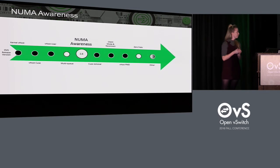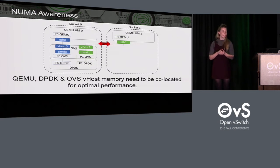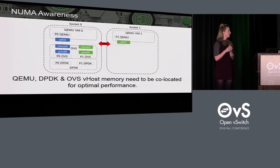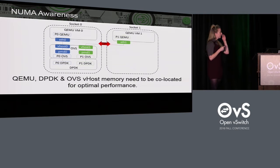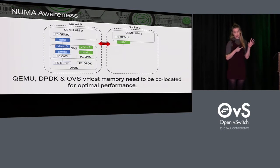The first feature I'll go into detail on is NUMA awareness. NUMA-aware vhost user is a DPDK feature introduced in DPDK 16.4 and integrated into OVS 2.6. It was introduced to address a problem with a common configuration where you have VMs with vhost user ports running on separate NUMA sockets. The diagram shows that setup: two sockets, two VMs each with vhost user ports, and OVS DPDK running on the host. The memory associated with each port is color coded — VM0 memory is in blue and VM1 memory is in green.